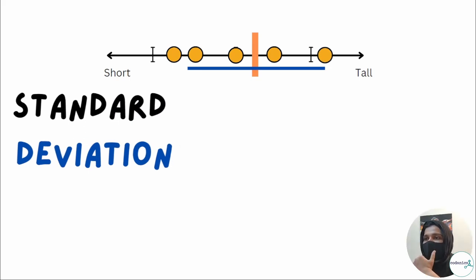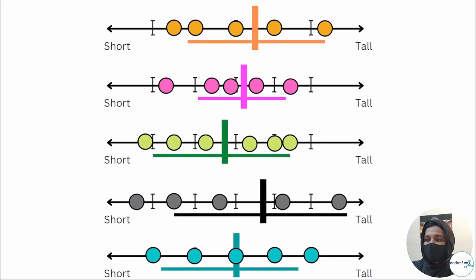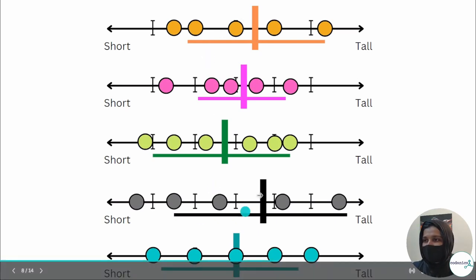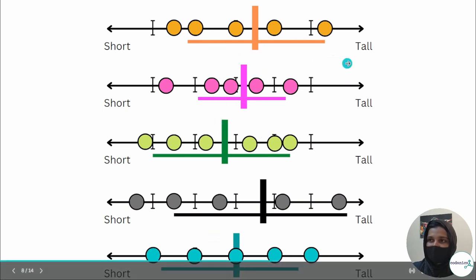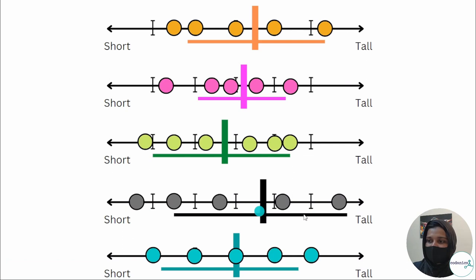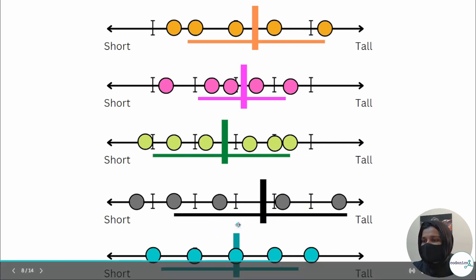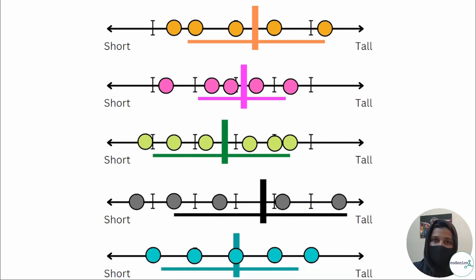Now if we have one group, or say 5 groups like 5 Zoom breakout rooms, and we measure 5 people's heights in each group and calculate the average from the data, we can find the standard deviation for each group. So here we have average and standard deviation.